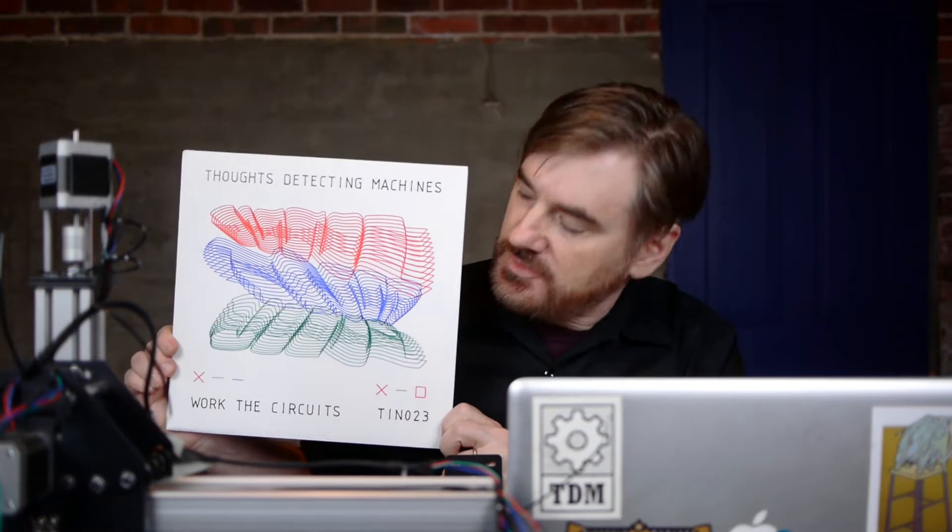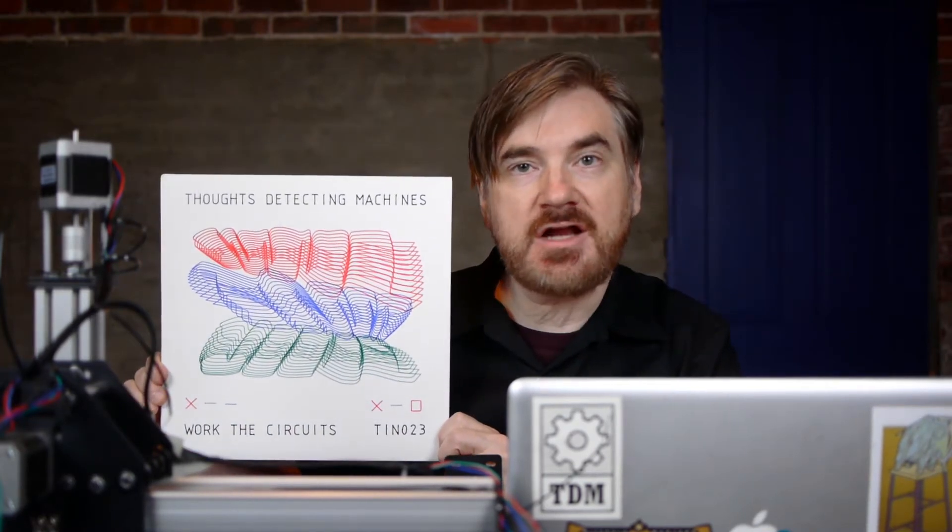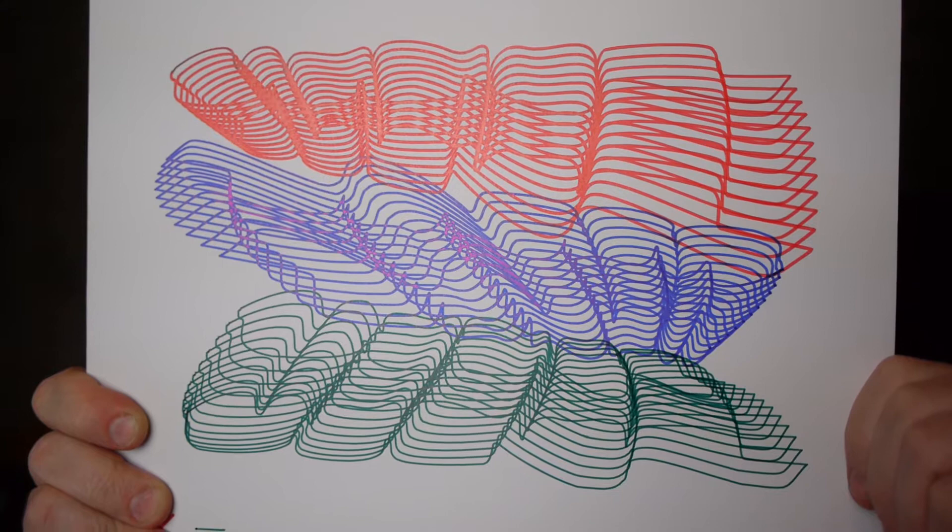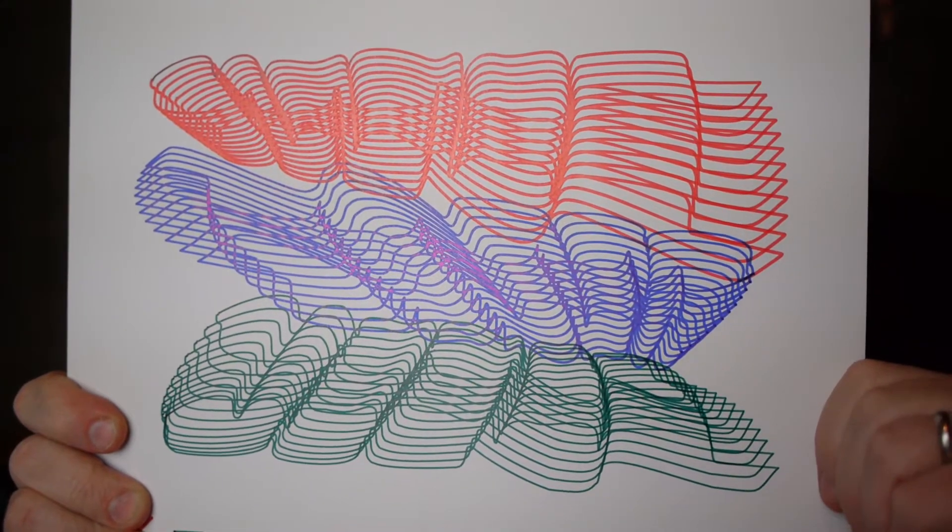Hi, this is Rick from Thoughts Detecting Machines, and this is my new record, Work the Circuits. It's pressed on 180-gram vinyl, and each copy comes with unique artwork printed with a pen plotter.